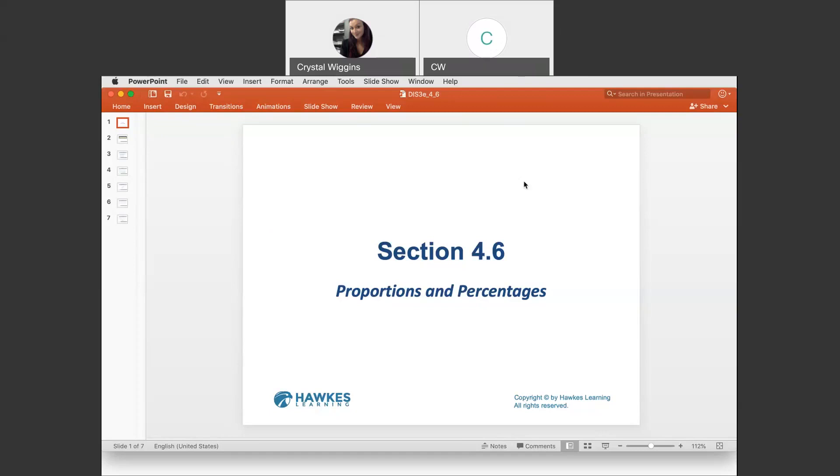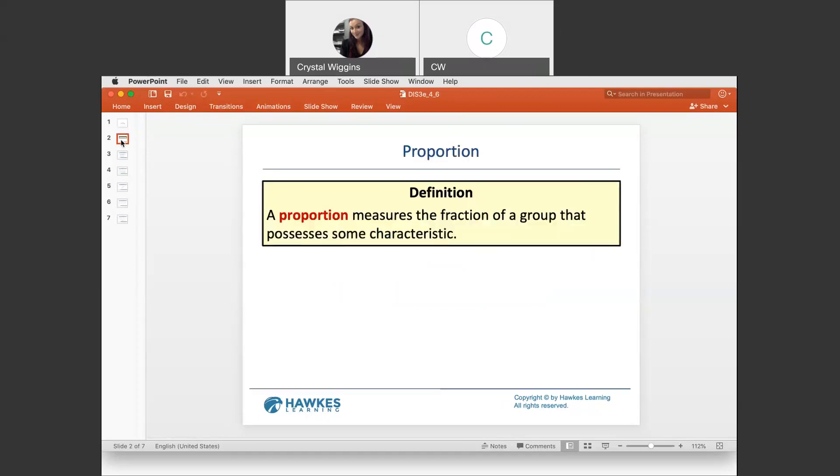When we have colors of M&Ms and we want to know a little bit about those colors, like what is the proportion of M&Ms ever made that were red, we use a proportion calculation. A proportion measures the fraction of a group that possesses some particular characteristic, like in my example, the characteristic being the M&M is red.